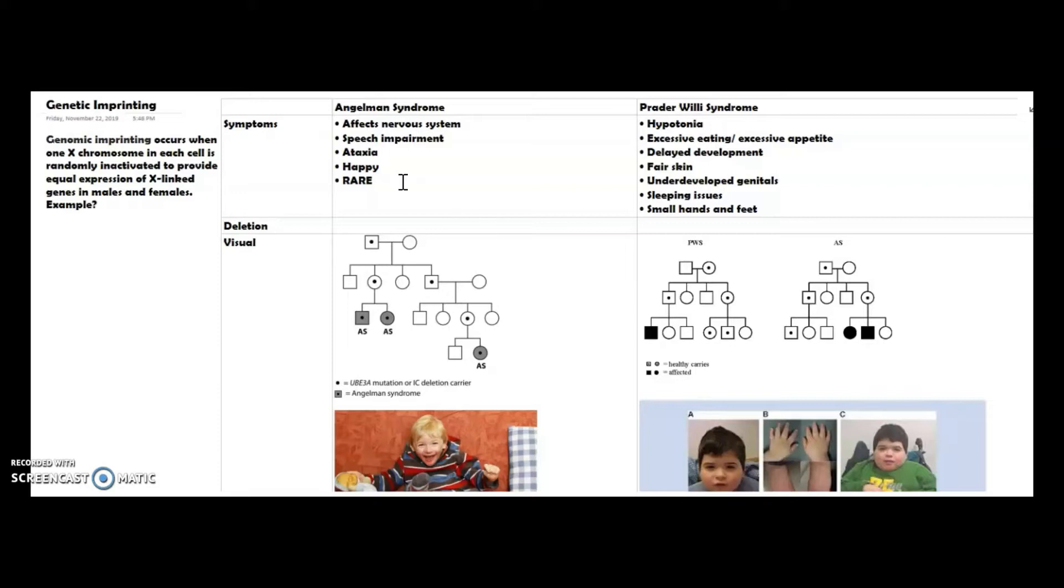They have a characteristic of happy jerky movements. If you put a child with AS on a bed, you can see them kind of slowly doing these jerky movements. It's something they can't control; it just happens. So that's another sign of Angelman syndrome.